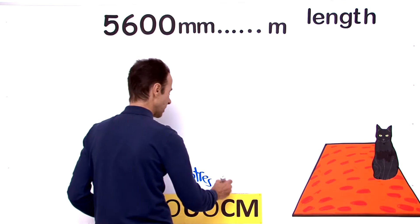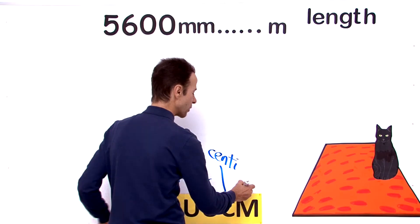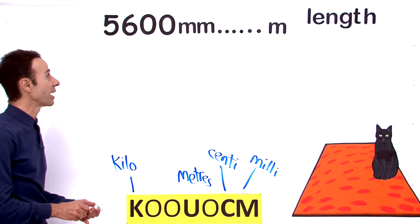C stands for centi, like centimeters, and M stands for milli, like millimeters. Okay, let's have a look where we are at.